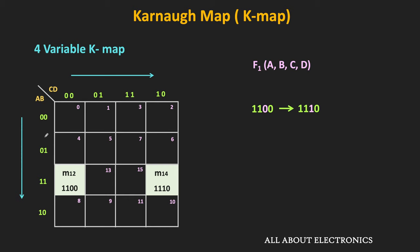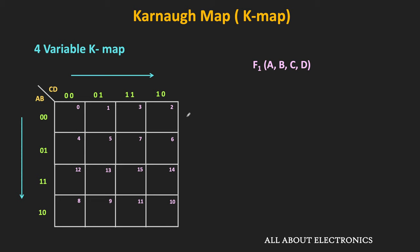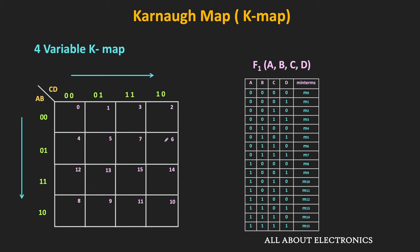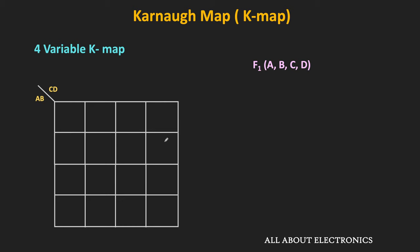Because of this grey code formatting, the cells or minterms are not in sequence. So if you see the numbering of these cells, then after 1 we have 3 instead of 2, and likewise, after 5 we have 7 instead of 6. From the combination of variables a, b, c, d, we can identify the minterm represented by a particular cell. But if we want to directly write the minterms and draw the kmap, here is how we can do that.